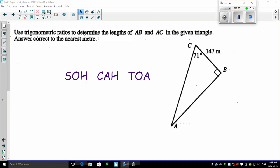Here's a really great question. If you read it, it says, use trigonometric ratios to determine the lengths of AB and AC in the given triangle.